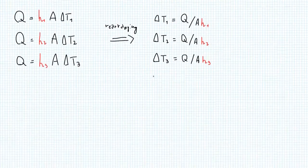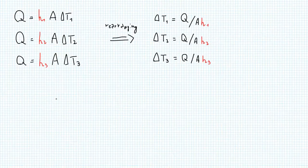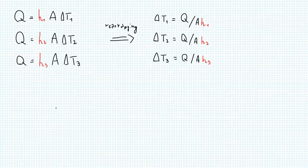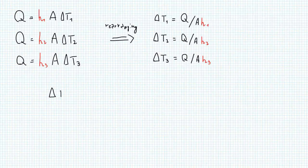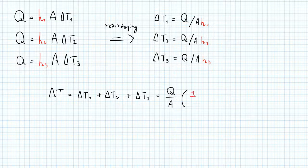So adding up all these temperature changes will give us our overall delta T. So delta T equals delta T1 plus delta T2 plus delta T3. And if we sum the right-hand sides of each of those equations, we get Q over A times this term 1 over H1 plus 1 over H2 plus 1 over H3.